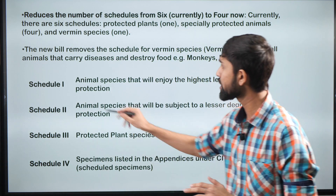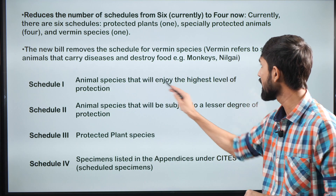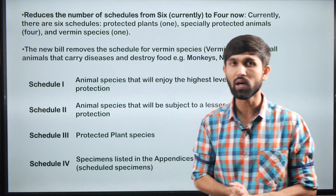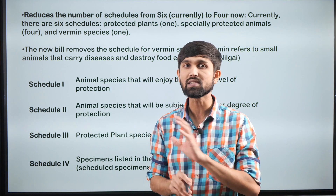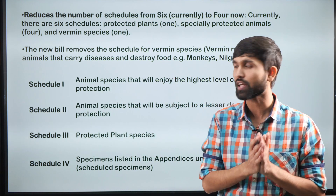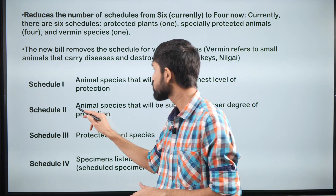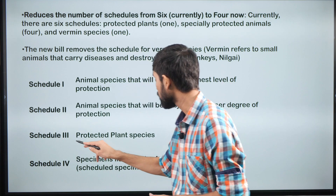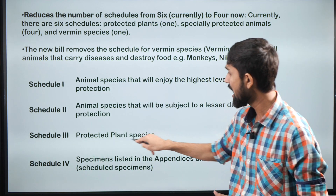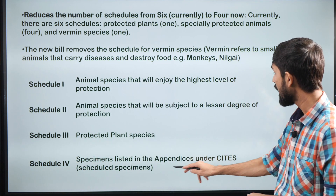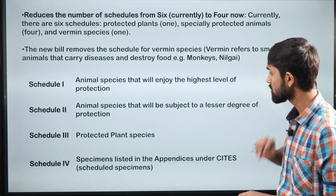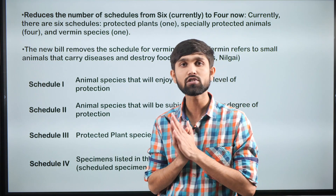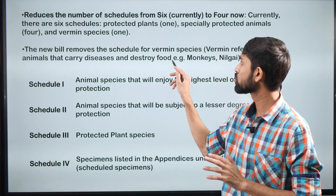Under the new schedule structure, Schedule 1 will have animal species enjoying the highest level of protection — Tiger, Great Indian Bustard, and Elephant are accorded Schedule 1 status with the highest penalties for any violation. Schedule 2 would have animal species subject to a lesser degree of protection. Schedule 3 will have protected plant species. Schedule 4 has specimens listed in the appendices under the CITES convention.